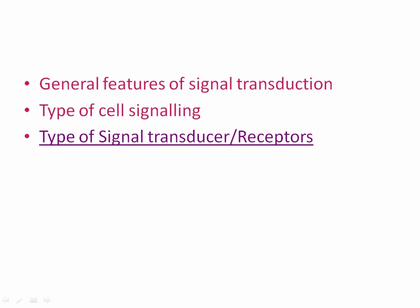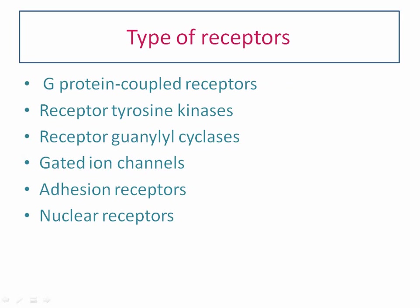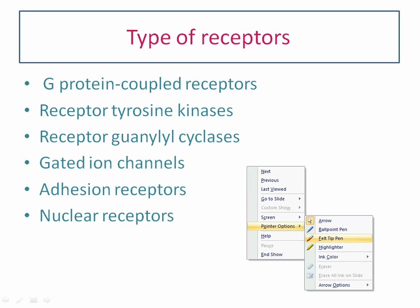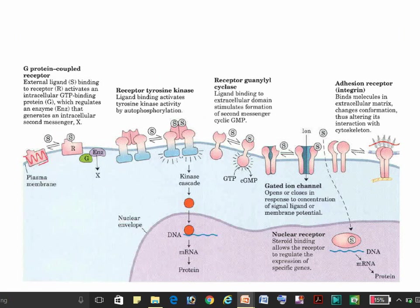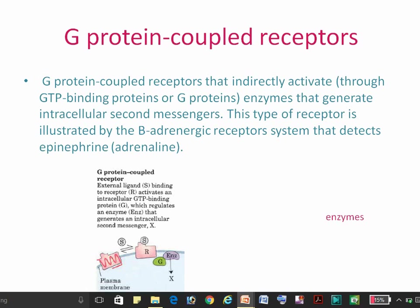Hi friends, welcome to Cruise Biology. Today we are going to discuss the types of receptors. There are six types: first, G protein-coupled receptors; second, receptor tyrosine kinases; third, receptor guanylyl cyclase; fourth, gated ion channels; fifth, adhesion receptors; and sixth, nuclear receptors. Now we are going to discuss each of the six types.